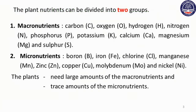The plant nutrients can be divided into two groups. The macronutrients include carbon, oxygen, hydrogen, nitrogen, phosphorus, potassium, calcium, and magnesium.